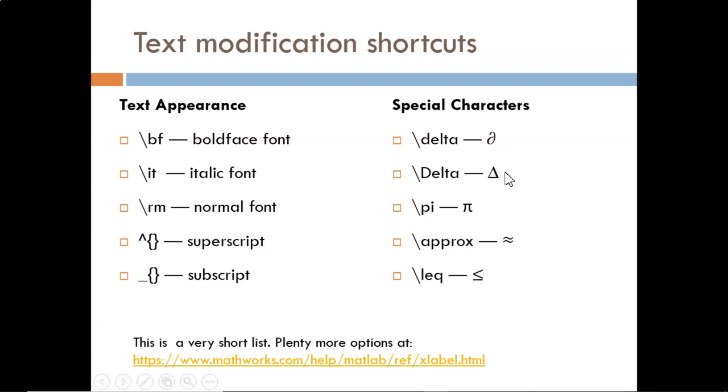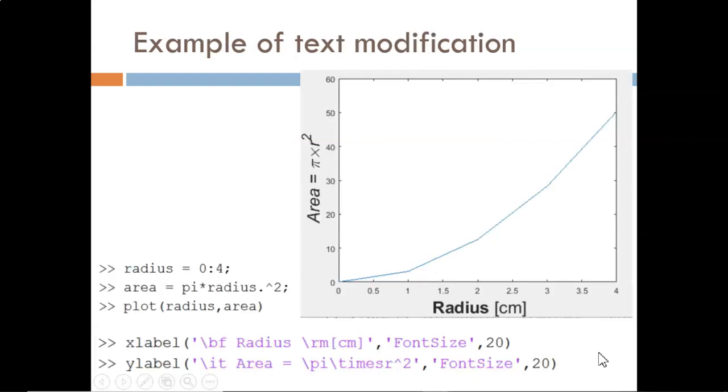A number of mathematical symbols are also available, such as the approximately equivalent and the less than or equal to signs. To see the full list of options, refer to the official MathWorks documentation. Here we see an example of text modifiers in use. Notice the x label starts with bold font, but then returns to normal font. The y label is all in italics, and it uses the special symbols for pi and for the times operation. Lastly, the 2 in r squared is nicely written as a superscript.